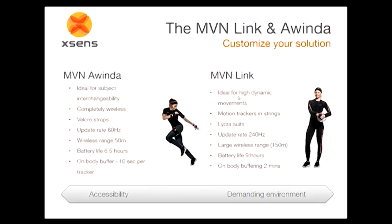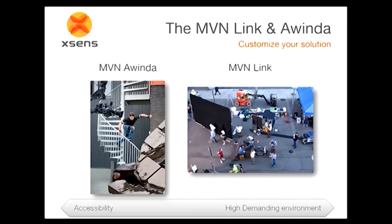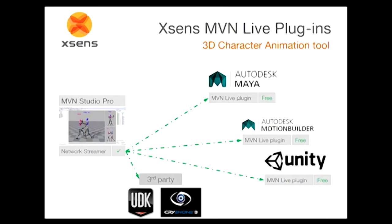The Link is recommended for live shoots involving rolling, tackling, or other intense interactions — the motion trackers are wired to a central body pack that transmits the signal. This gives an update rate of about 240 frames per second, a larger range, and longer battery life. Both systems can be used for production-quality results. The active hardware — magnetometers, accelerometers, and gyroscopes — is the same between the two. The key consideration in choosing is how the suit will be used.